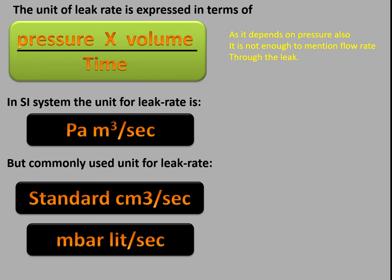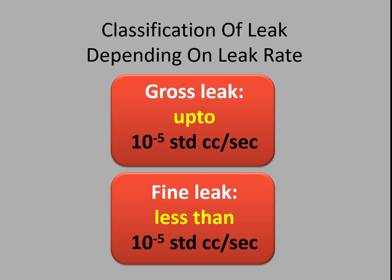The unit of leak rate is expressed in terms of pressure multiplied by volume divided by time. In the SI system, the unit of leak rate is Pascal meter cube per second. Commonly used units for leak rate are standard cubic centimeter per second and millibar per second.